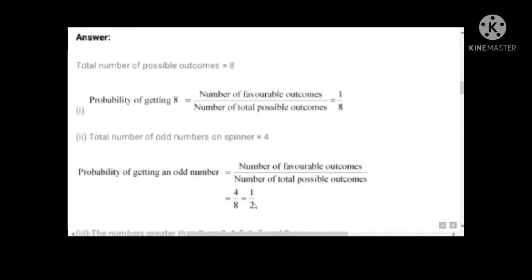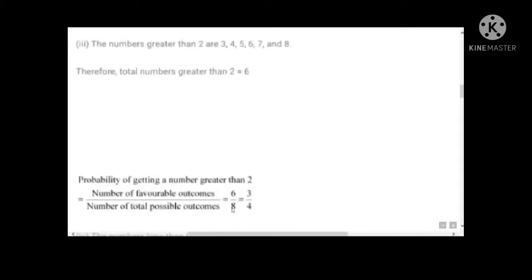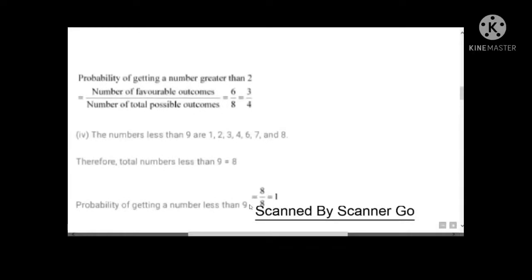Question three: numbers greater than 2. Numbers greater than two are 3, 4, 5, 6, 7, 8 — that is six numbers. So probability of getting a number greater than 2 is six by eight, which equals three by four. For numbers less than 9: all numbers 1 to 8 are less than 9, so total is eight, and probability is eight by eight equals one.